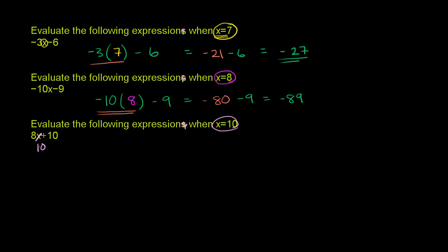So it's 8 times 10, which is 80, plus 10, which is 90. So this is 80 plus 10, which is equal to 90. And we're done.